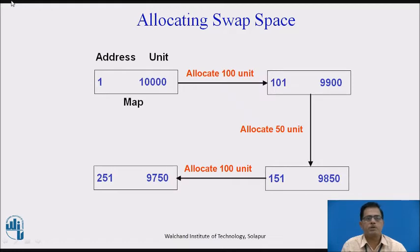The freed resources partially fill a hole in the map when the address of the freed resources is contiguous with the map entry that would immediately precede them or with the entry that would immediately follow them. The kernel adjusts the address and units fields of the appropriate entry to account for the resources just freed; the number of entries in the map remains the same. The freed resources can also partially fill a hole but not be contiguous to any resources in the map, as shown in the figure.